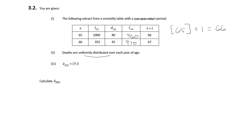Deaths are uniformly distributed over each year of age, so here it's UDD, and the median lifetime at age 65 is 15. So we want to find the median lifetime at 66.